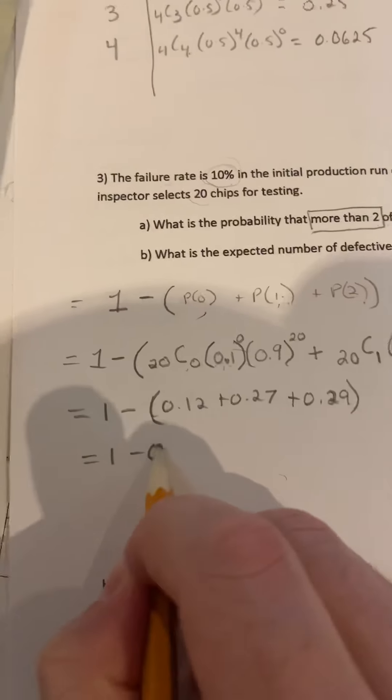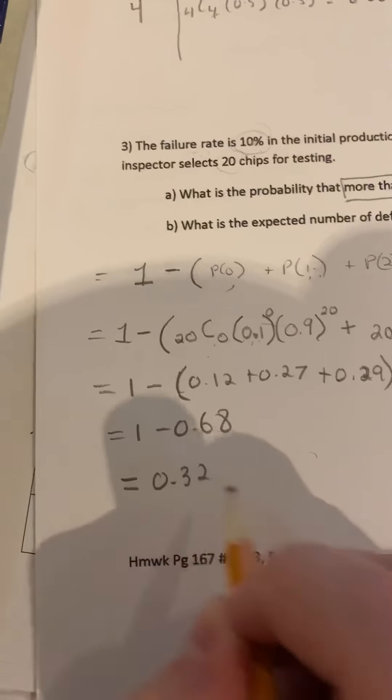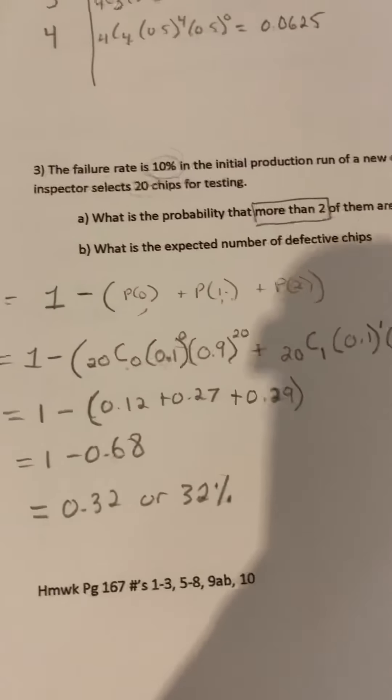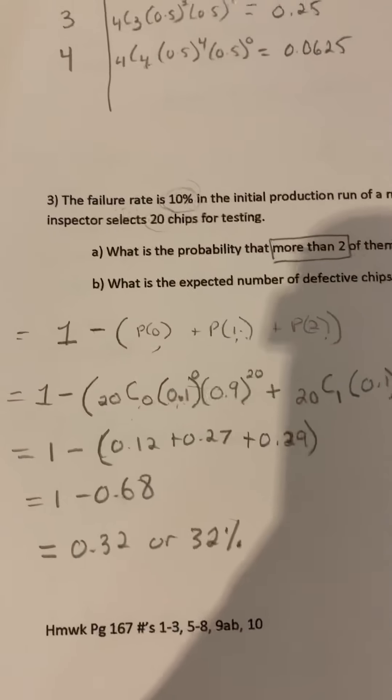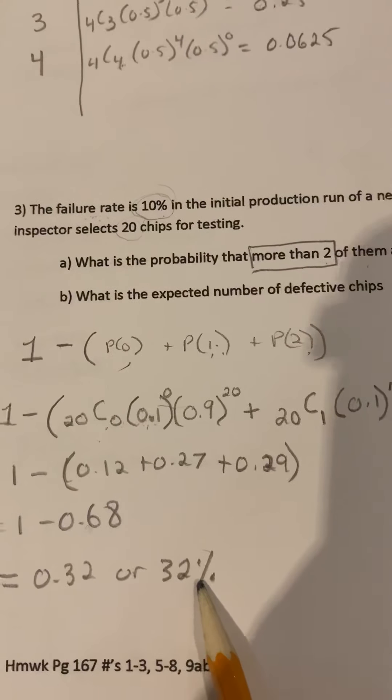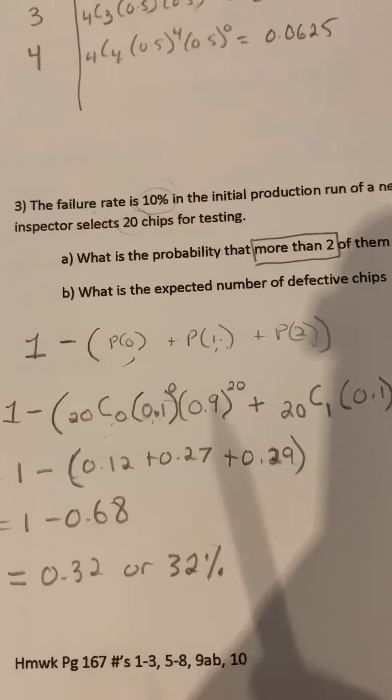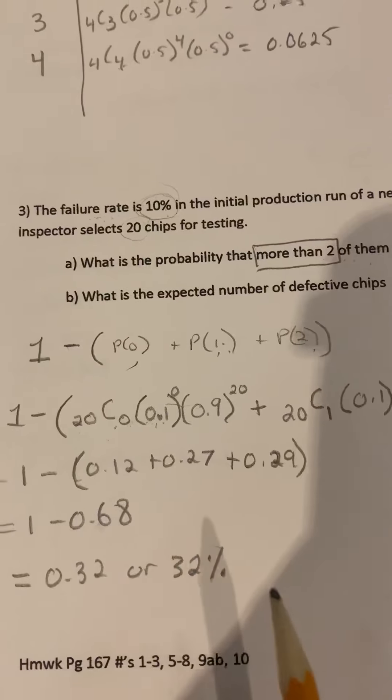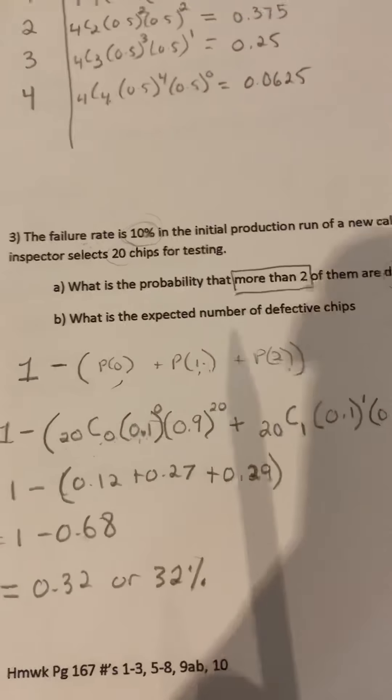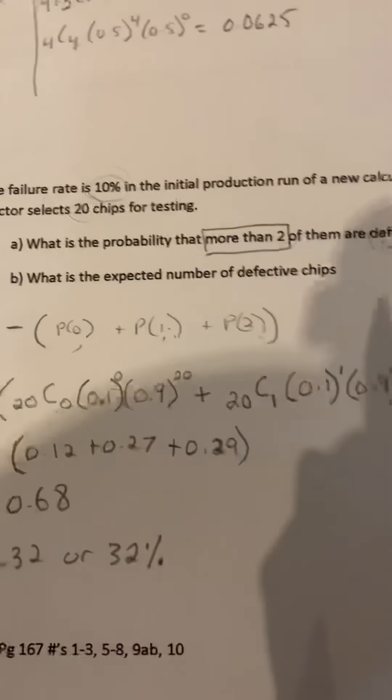Which is 1 minus 0.68 or 0.32, which is 32%. So there is a 32% chance that you will have more than 2 defective chips if the inspector selects 20. So that was A.